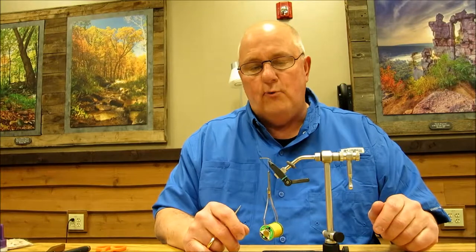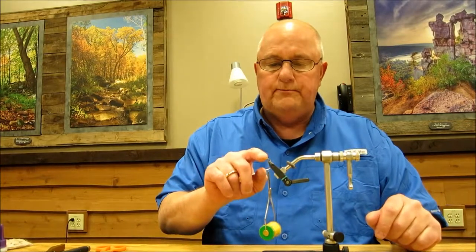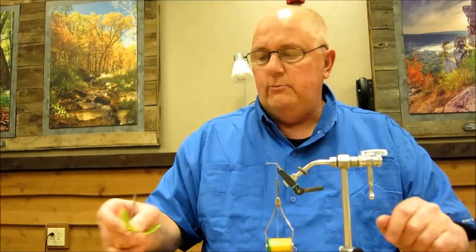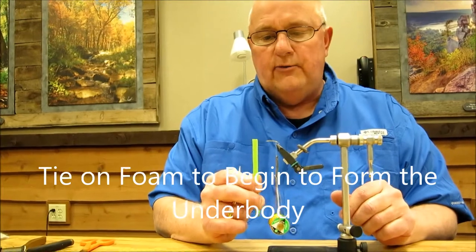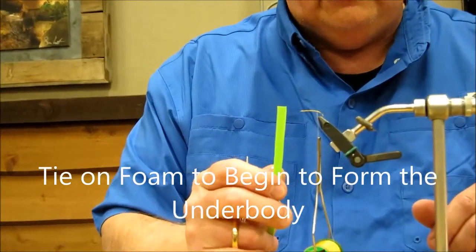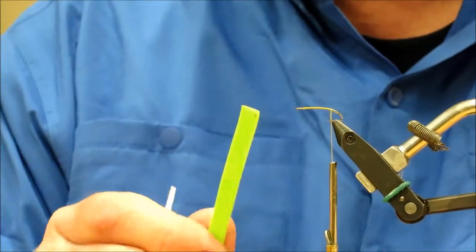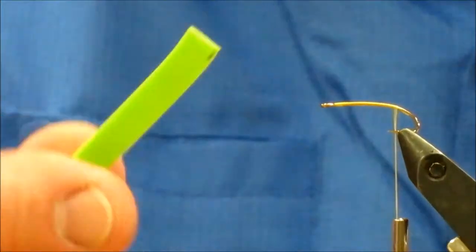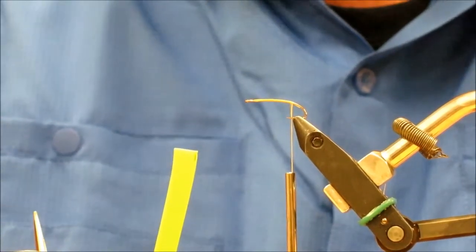It's a foam fly, so I've laid my thread down. Then I'm going to take a piece of 2mm craft foam. This is 3/8 of an inch wide. You can go up to a quarter of an inch, but this is 3/8 of an inch wide. I have it in green. You can do these in yellow, green, tan, brownish. And if you want to do crickets, do them in black.